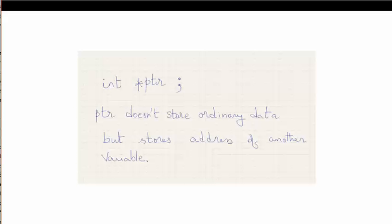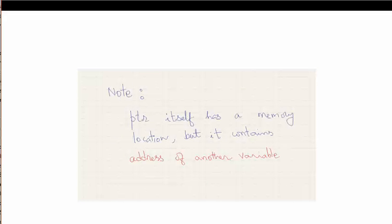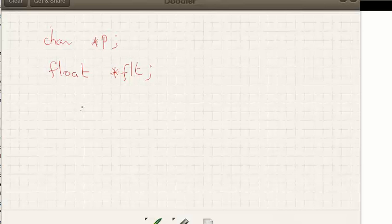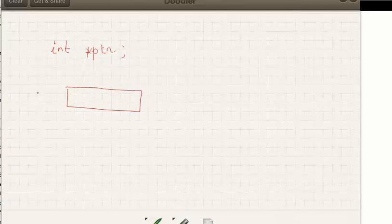As we discussed, a pointer variable doesn't store ordinary data but stores the address of another variable. The pointer itself also has its own memory location. For example, when you declare integer pointer, the pointer itself has a memory location — let's say 4990, some random address. So a pointer has its own address, and it stores the address of some other variable.